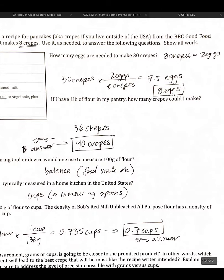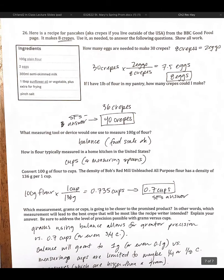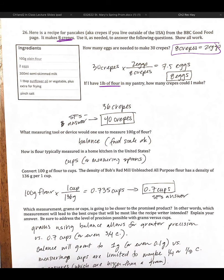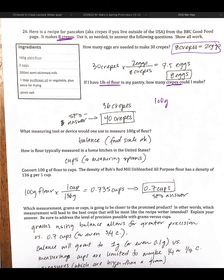All right, and then on the last page, again, we're just extracting our conversion factors from the recipe that we're given. So for example, 8 crepes are equal to 2 eggs. Because those things go together. 1 pound of flour, and I'd like to know how many crepes I can make. Well, then I need to come up with a relationship for that. Well, it turns out that 100 grams of flour are equal to 8 crepes. And that's my relationship. So I'm going to start with my 1 pound, get my pounds to grams, and then I can use this conversion factor.